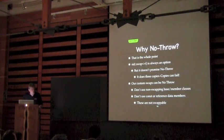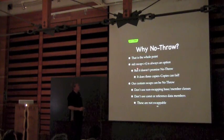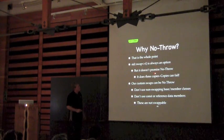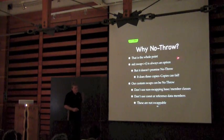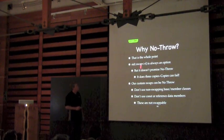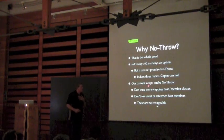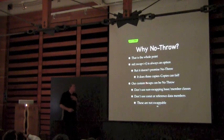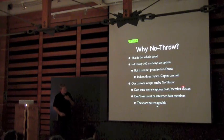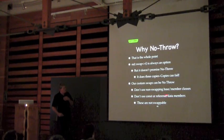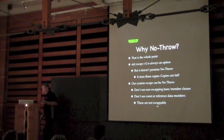The question is why no-throw? We could always just call swap. But in 2003, swap is three copies. Copies can fail, copies can throw. And we want a swap that's no-throw. We know we can write our own custom swap to be no-throw, assuming we didn't use any non-swappable bases or members, and assuming we didn't use const or reference data members — we can't swap those.